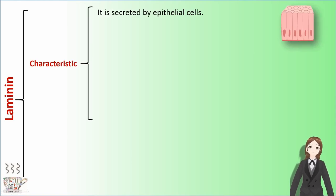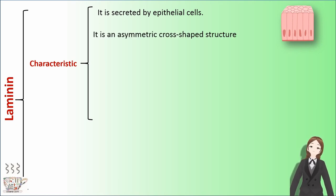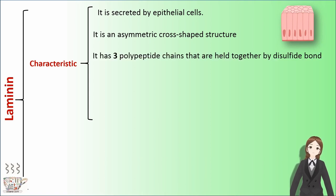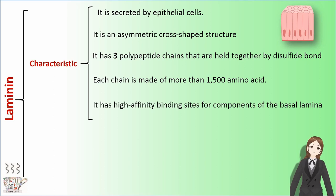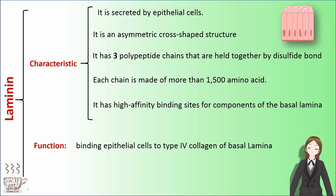Laminin is secreted by epithelial cells. It is an asymmetric cross-shaped structure with three polypeptide chains held together by disulfide bonds. Each chain is made of more than 1,500 amino acids. It has high-affinity binding sites for components of the basal lamina, and it plays a role in binding epithelial cells to type 4 collagen of the basal lamina. It is located in the basal lamina.